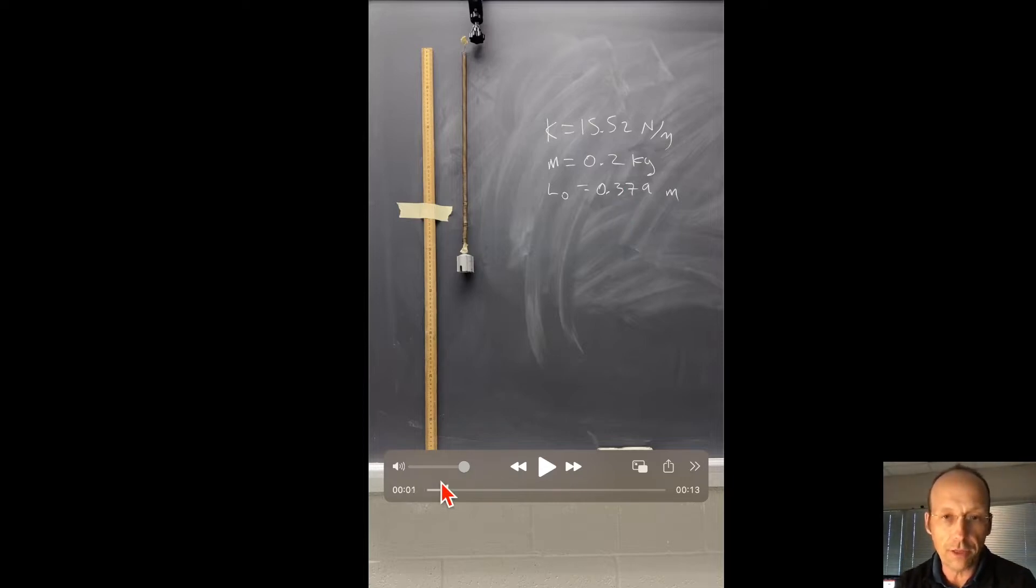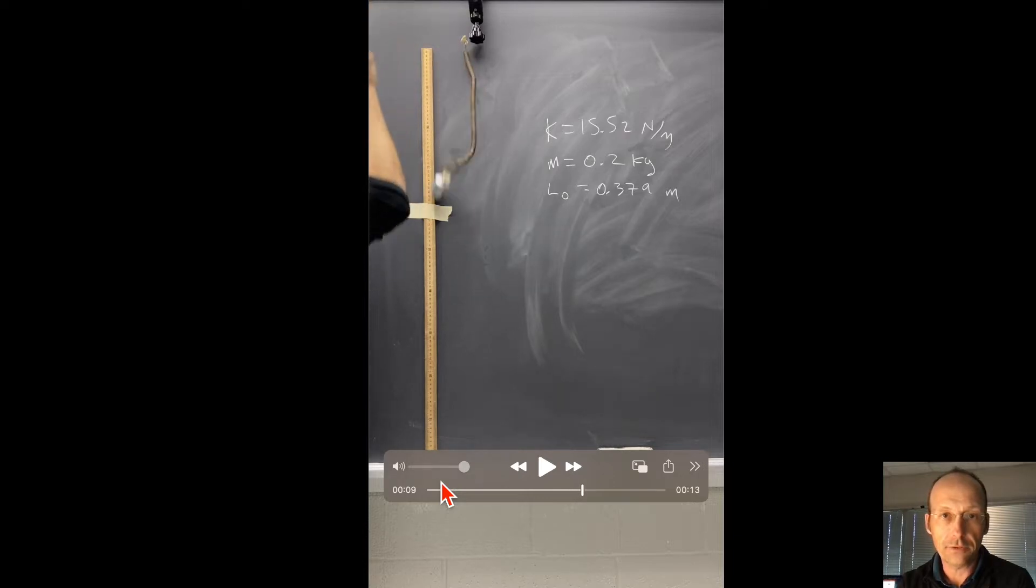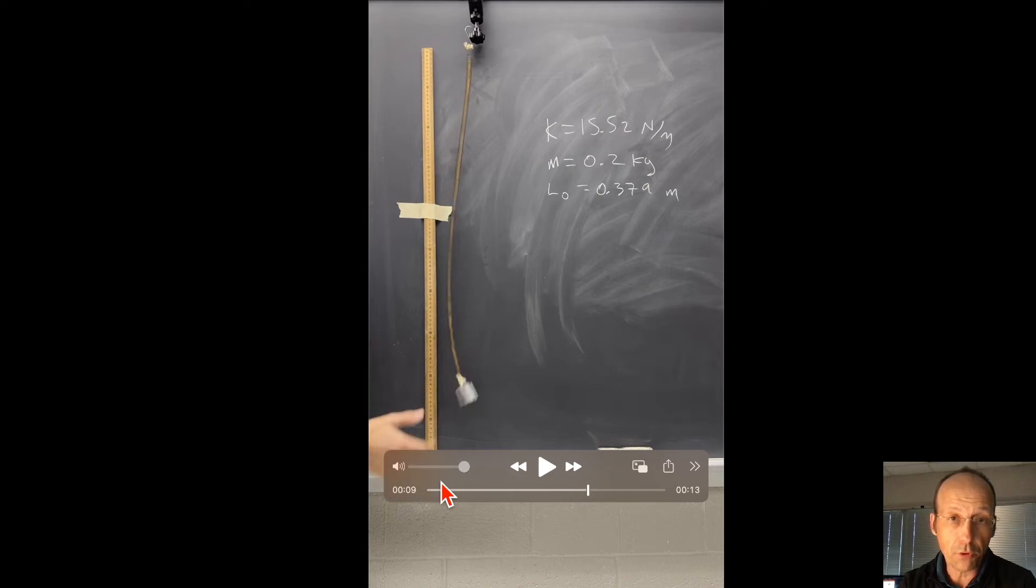Let me just scrub through this and show you what happened. I'm going to lift it up to here. The spring is completely unstretched. I'm going to drop it. I'm going to do it in slow motion. It's going to fall and then it's going to go down to some lowest point right down there. It's going to bounce back up. We want to find what that lowest point is.